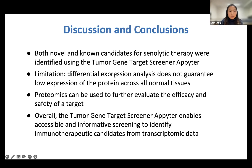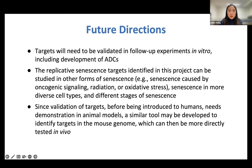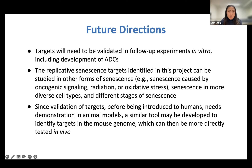As next steps, the targets identified here would need to be validated in follow-up experiments in vitro, including development of ADCs. These RS targets should also be investigated in other forms of senescence, different cell types, and different stages of senescence. Finally, since these targets would eventually need demonstration in animal models, we want to extend this screening approach to the mouse genome so it can be more directly tested in vivo. Daniel Clark recently added the Tabula Muris dataset as a new background in APTER, and more datasets are planned.